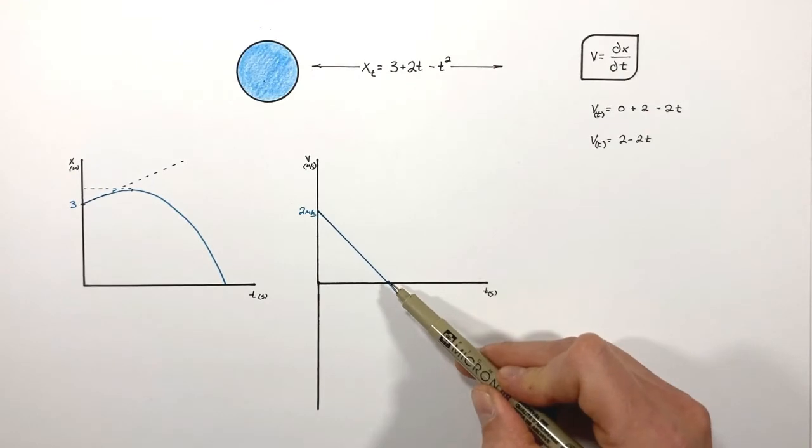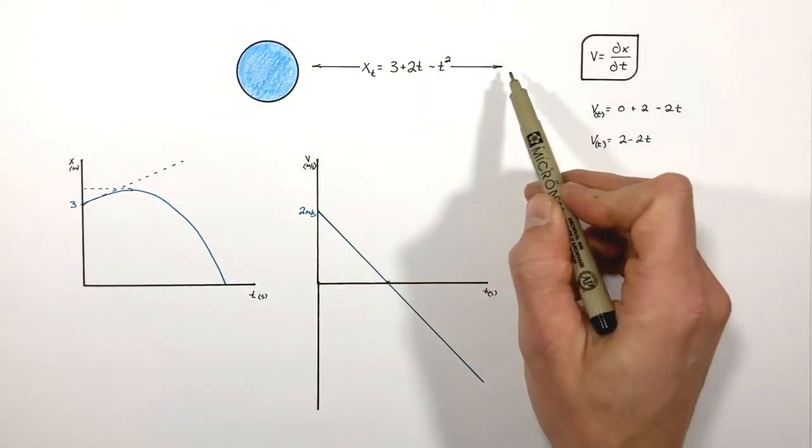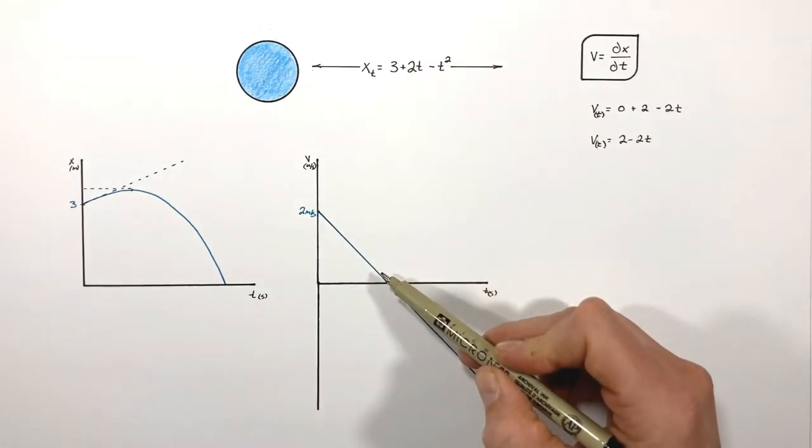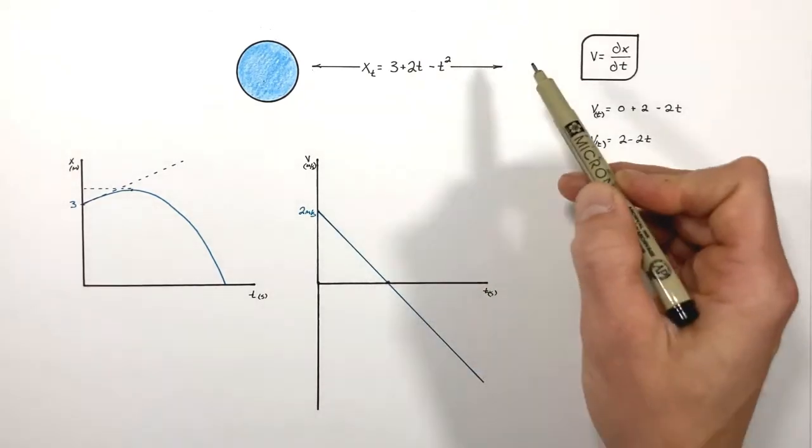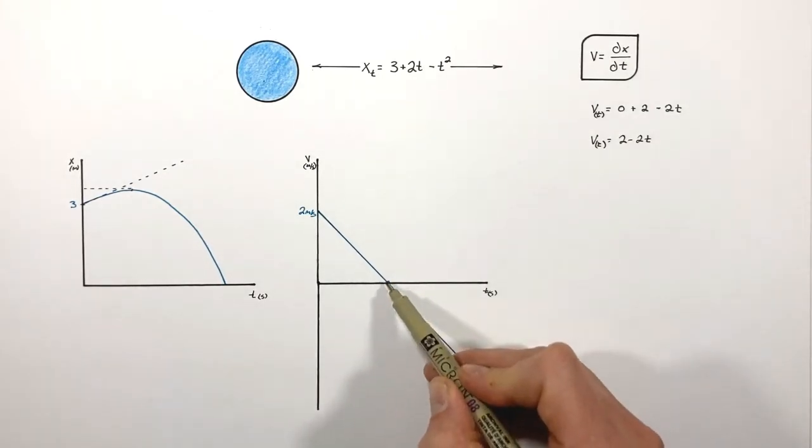It's important to realize that the velocity is 0 right at this point when the particle goes from moving to the right, or in the positive direction having a positive velocity, to moving to the left, that is to say having a negative velocity.